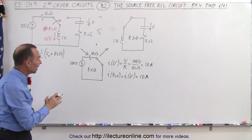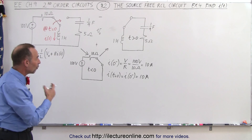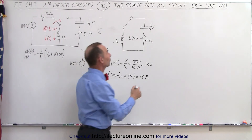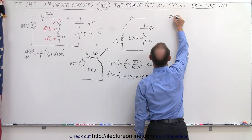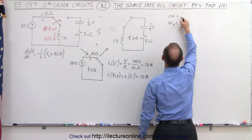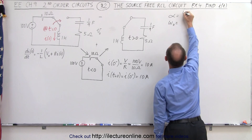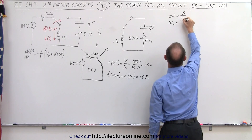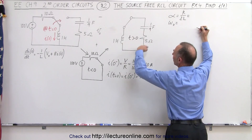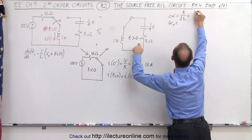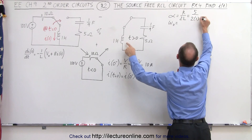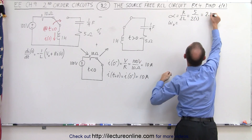We still have to determine whether we have an overdamped, critically damped, or underdamped system, so we should find the damping factor and the natural frequency. The damping factor by definition is resistance divided by 2 times the inductance. The resistance of this part of the circuit is 5 ohms and the inductance is 1 henry, so that gives us 5 over 2 times 1, which equals 2.5.